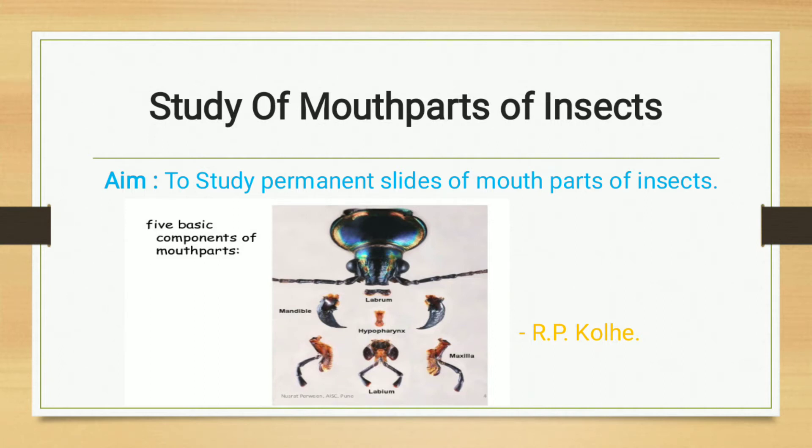The aim of this practical is to study permanent slides of mouthparts of insects. On our screen we see the picture of mouthparts. These are the basic components of mouthparts which are always seen in each and every insect: labrum, hypopharynx, labium, mandibles, and maxillae. These are the five basic components, and from insect to insect the components will be changed or modified.